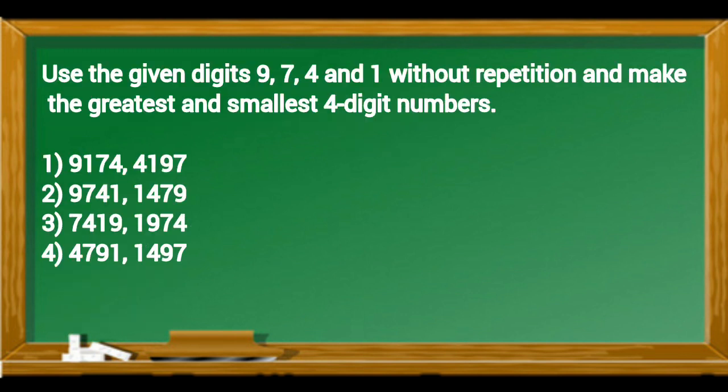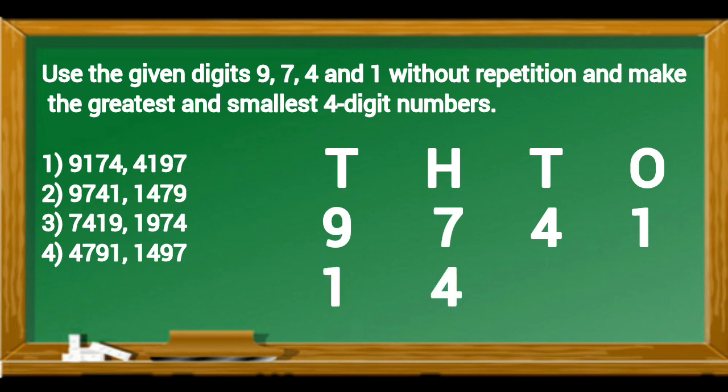Use the given digits 9, 7, 4, and 1 without repetition and make the greatest and smallest four-digit numbers. By using number system, the greatest number is 9,741. The smallest number is 1,479, so the second option is the correct answer.